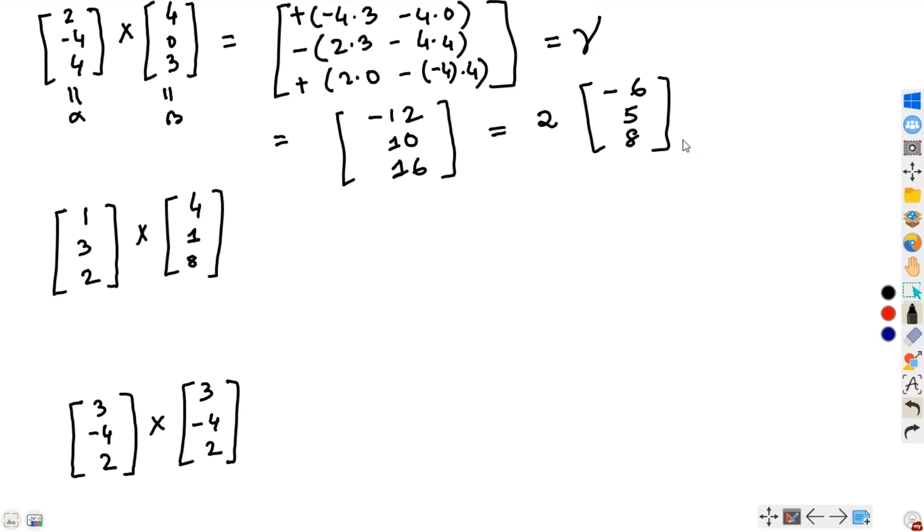If you want to verify whether this is the correct answer, as we have seen in our last session, the easiest way is to compute the dot product of gamma with alpha and gamma with beta. If this is correct, then both dot products will be 0.